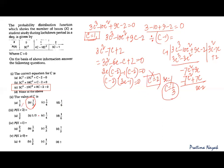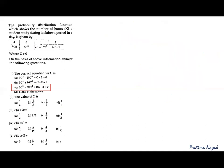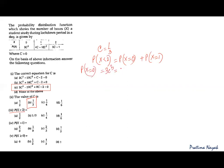After getting c = 1/3, the other parts are easy because all the values depend on c. Coming to the third part: P(X < 2) means P(X = 0) + P(X = 1). P(X = 0) = 3c³ = 3 × (1/3)³ = 3 × 1/27 = 1/9. P(X = 1) = 4c − 10c² = 4 × (1/3) − 10 × (1/3)² = 4/3 − 10/9.